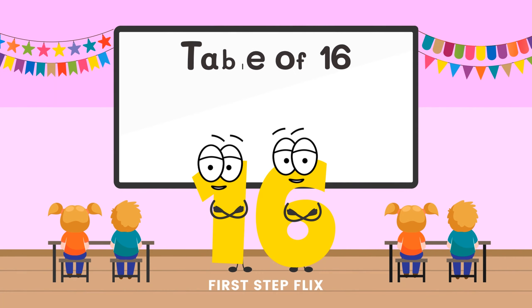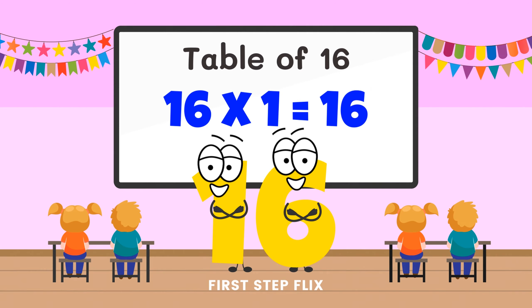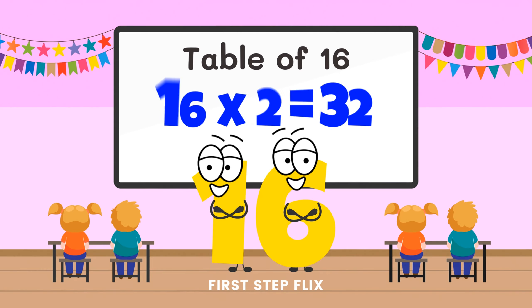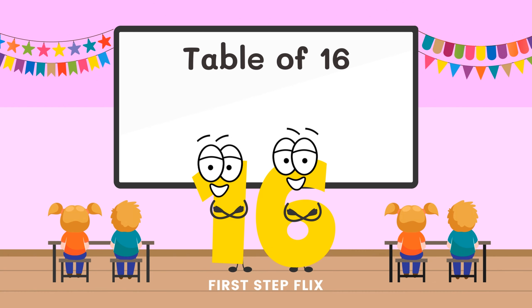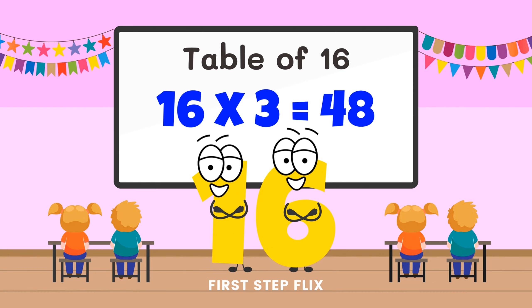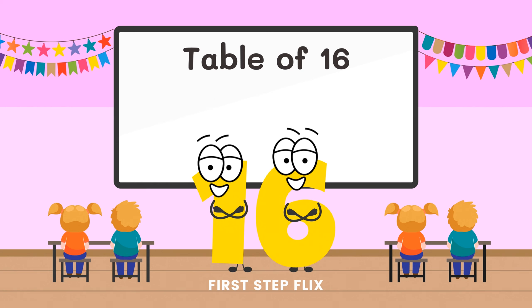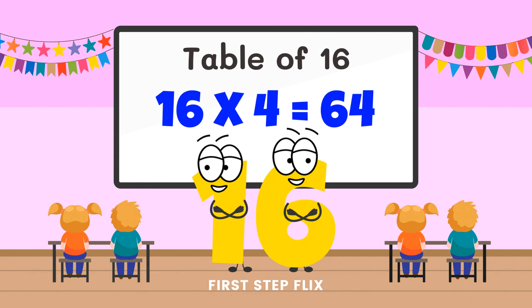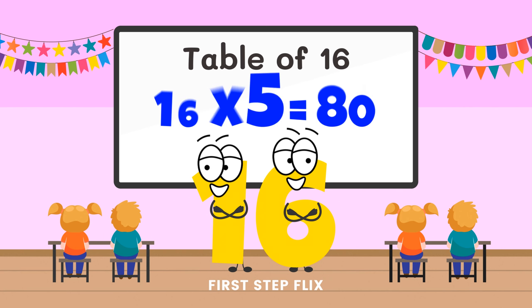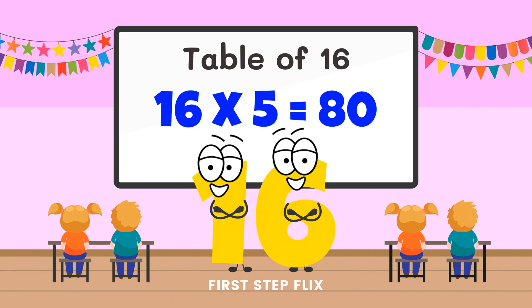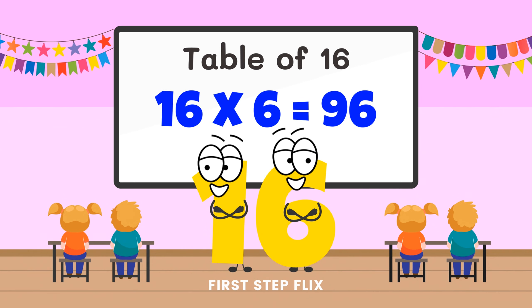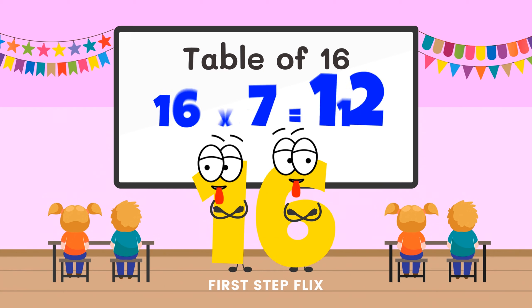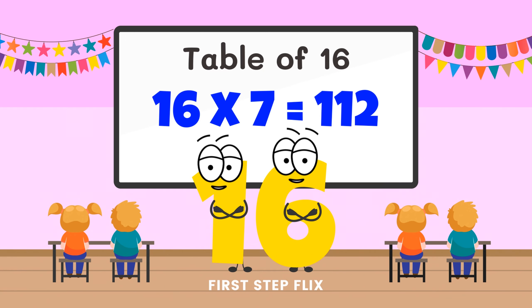Table of 16. 16 ones are 16. 16 twos are 32. 16 threes are 48. 16 fours are 64. 16 fives are 80. 16 sixes are 96. 16 sevens are 112.